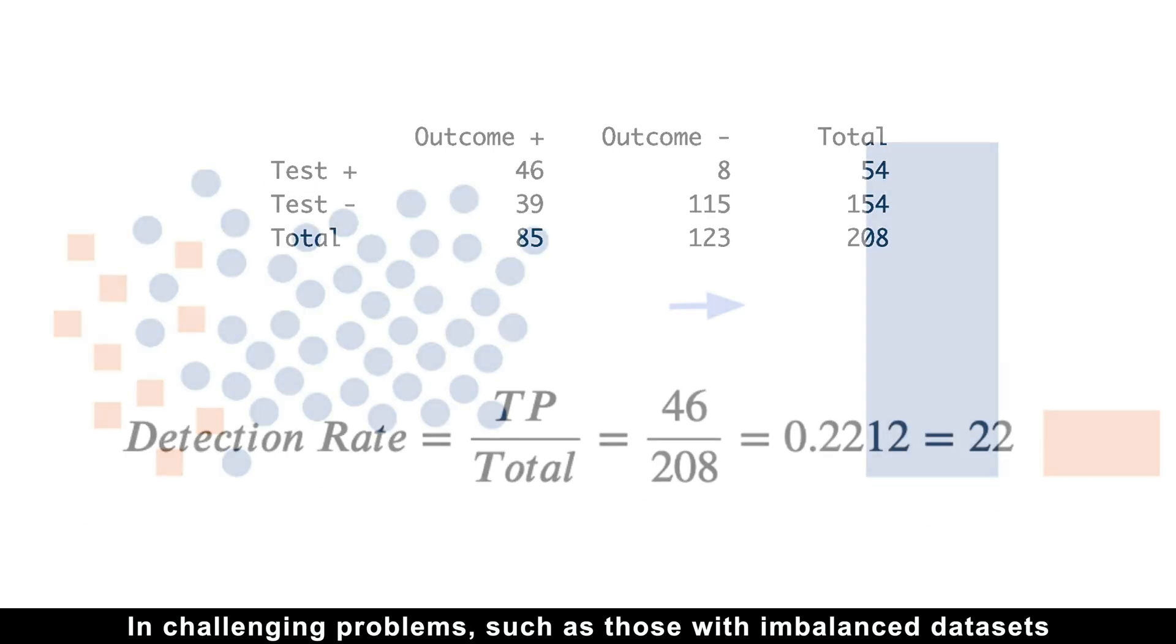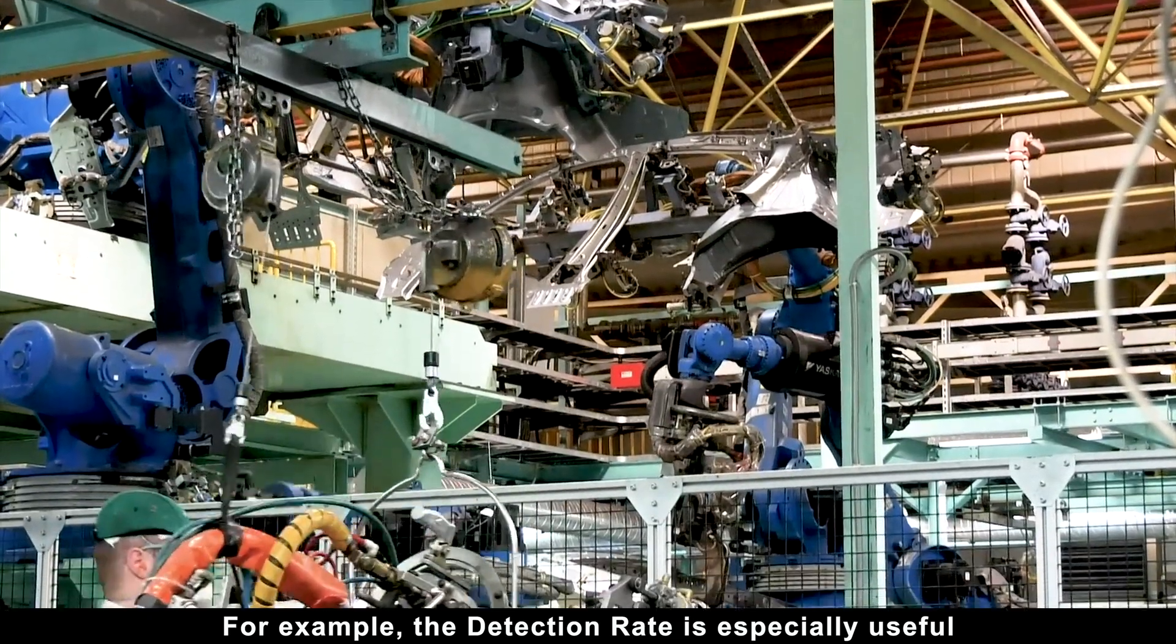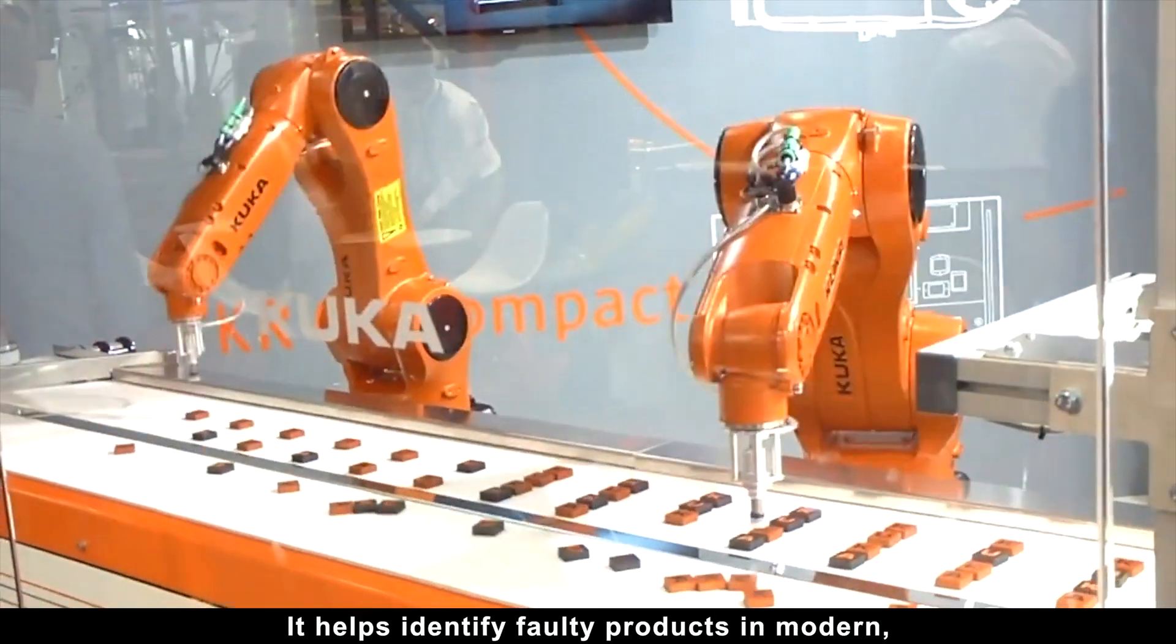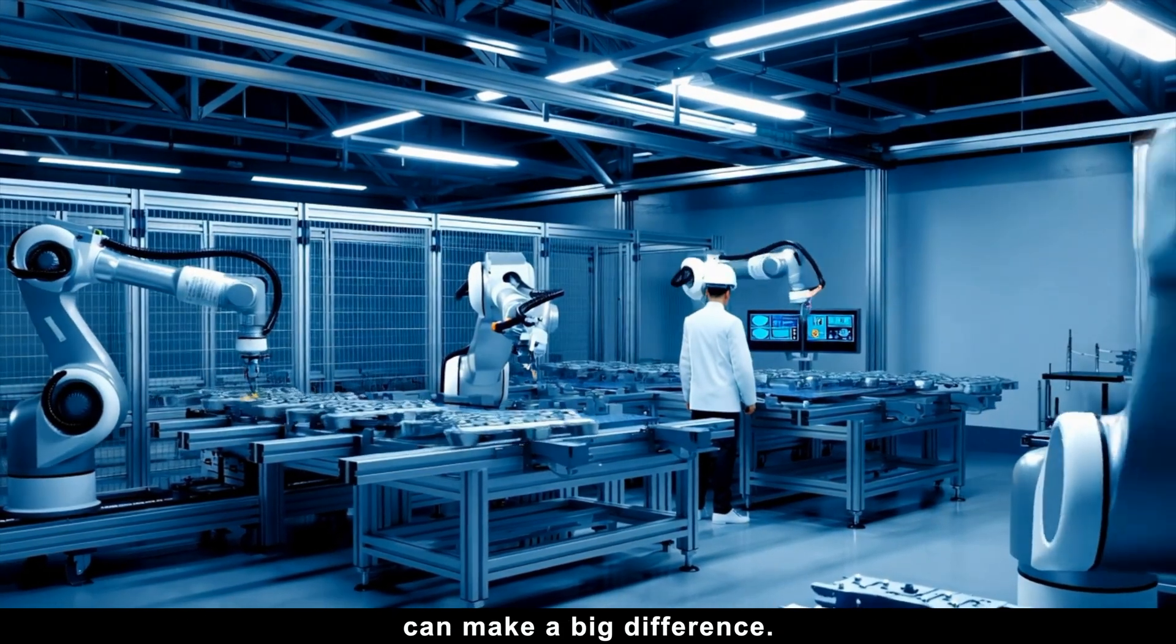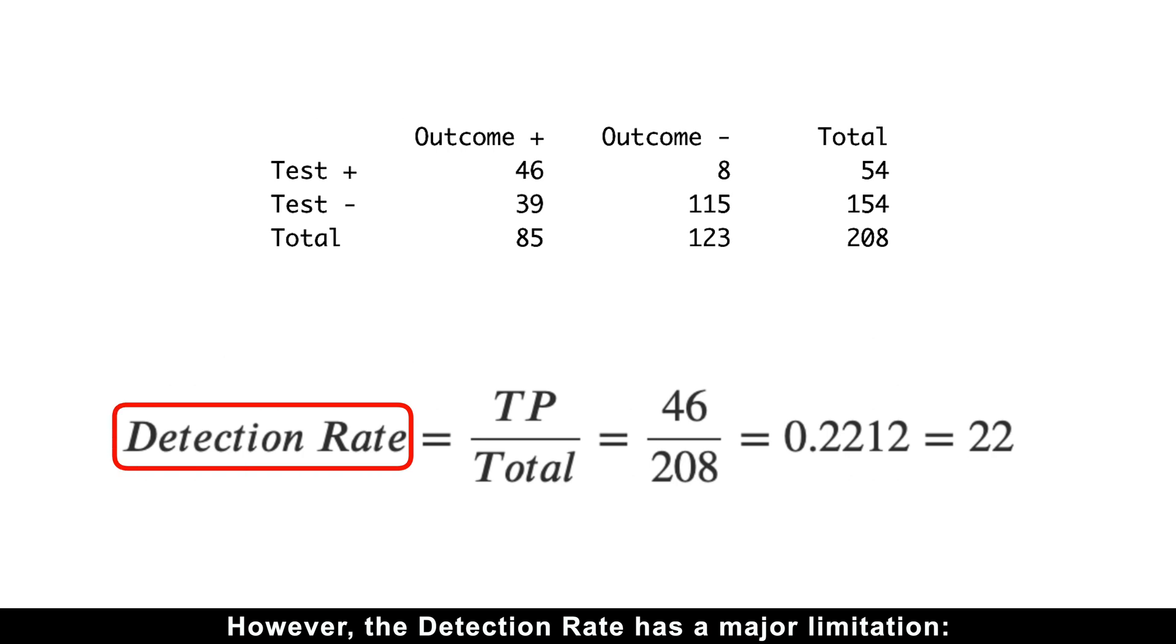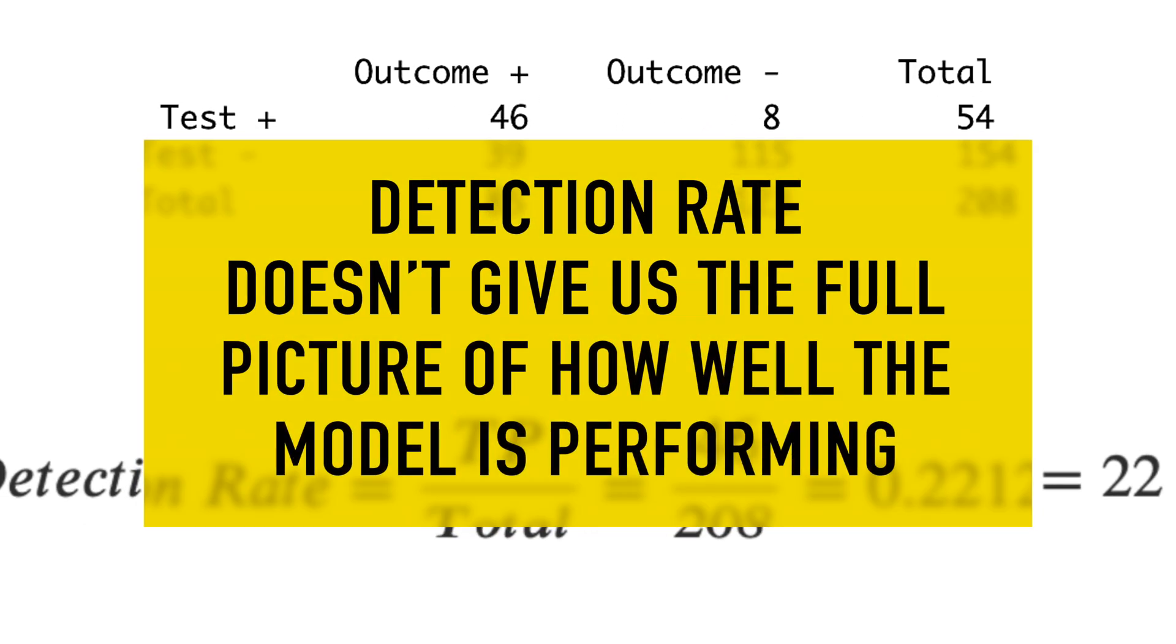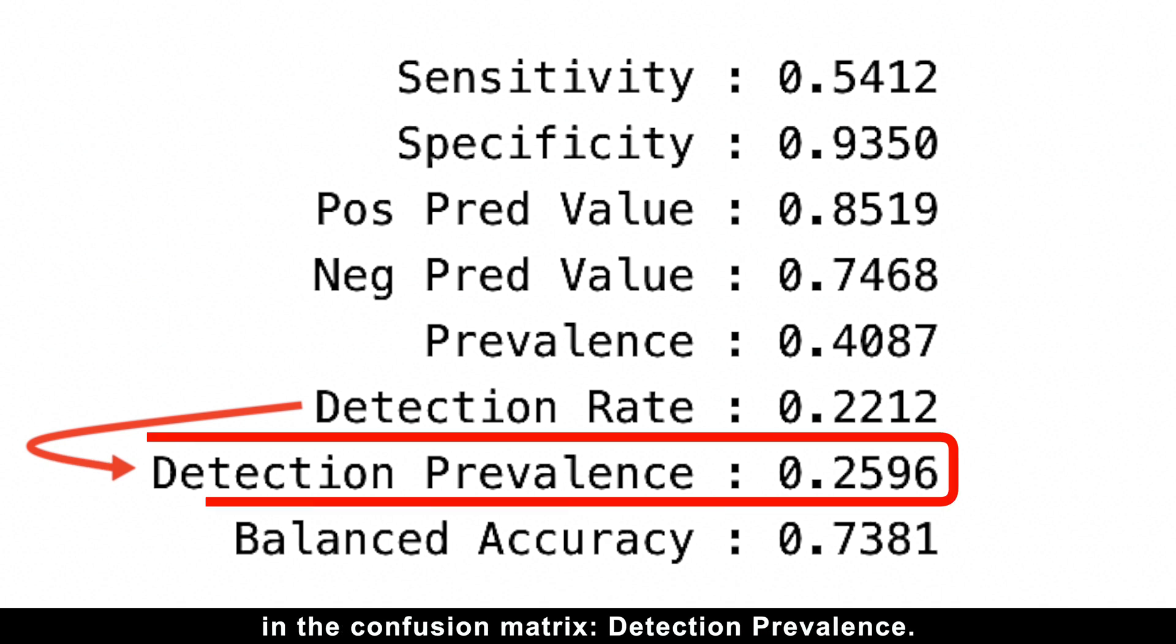In challenging problems, such as those with imbalanced datasets or complex tasks, 22% might actually represent solid progress. For example, the detection rate is especially useful in manufacturing to monitor defect rates. It helps identify faulty products in modern, robot-operated factories where even small improvements can make a big difference. However, the detection rate has a major limitation. It only focuses on true positives and completely ignores false positives. This means it doesn't give us the full picture of how well the model is performing. To get a more complete understanding, we need to look at the next important metric in the confusion matrix, detection prevalence.